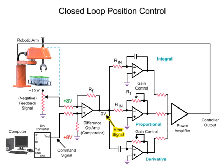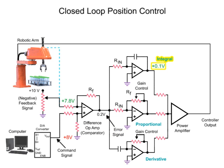With an error signal of zero, the output voltage of the integral amplifier is zero. The integral amplifier increases gain depending on the duration of the error signal — the longer the error is present, the larger the amplifier gain. The output of the integral amplifier increases and is further amplified by the power amp to overcome the friction and mass of the robotic arm, completing the final move to the desired position. The feedback signal is now equal to the command signal, output voltages of the amplifiers are zero, and the robotic arm motor stops turning.